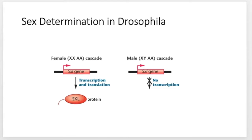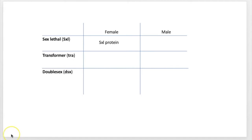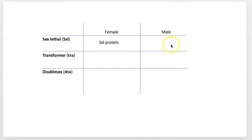The SXL protein is not produced in males. Here's our table: in females, the SXL protein is being produced; in males, no SXL protein. The SXL protein is produced in females because of the differential production of transcription factors. Remember, transcription factors can upregulate or downregulate the transcription of a gene — these would be the specific transcription factors that bind to cis-acting sequences.